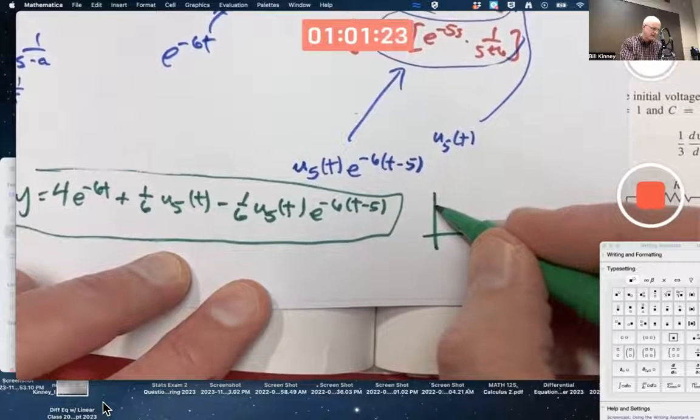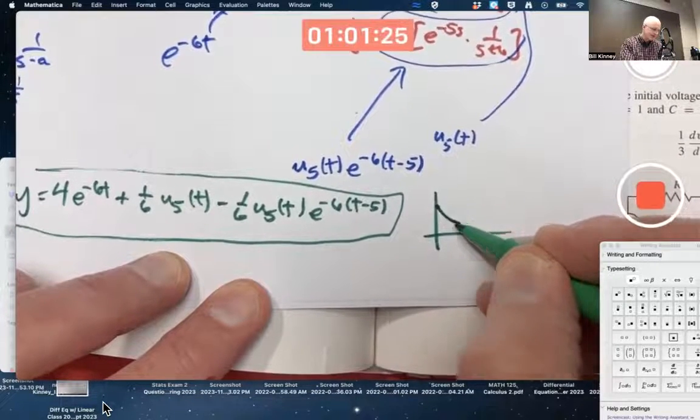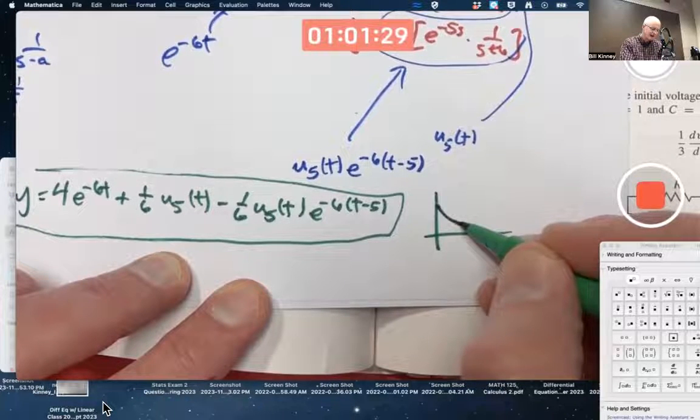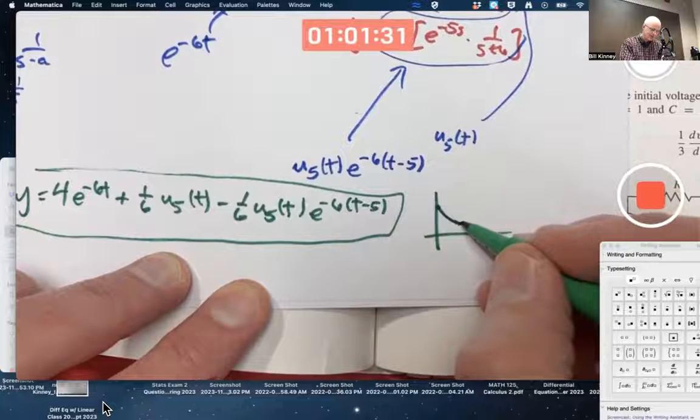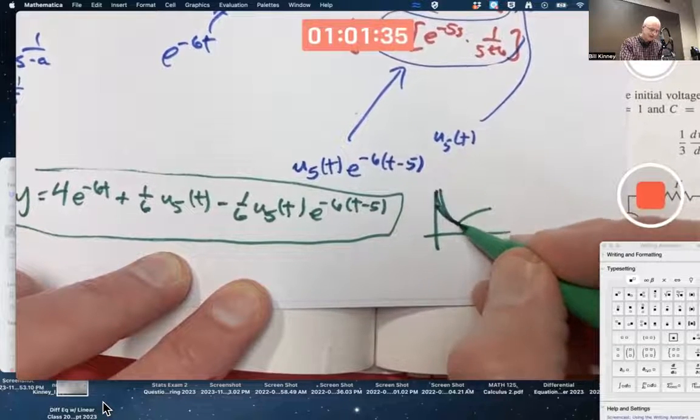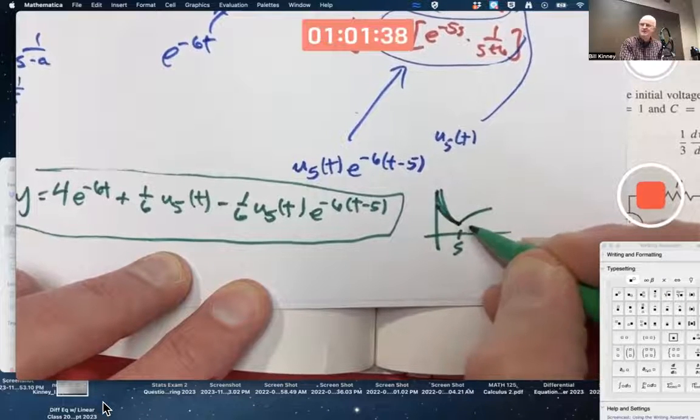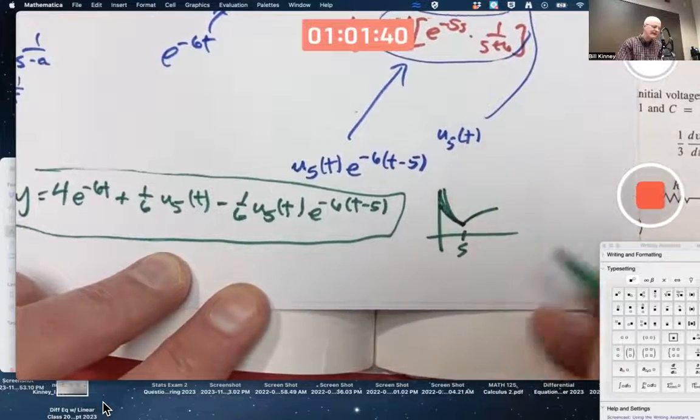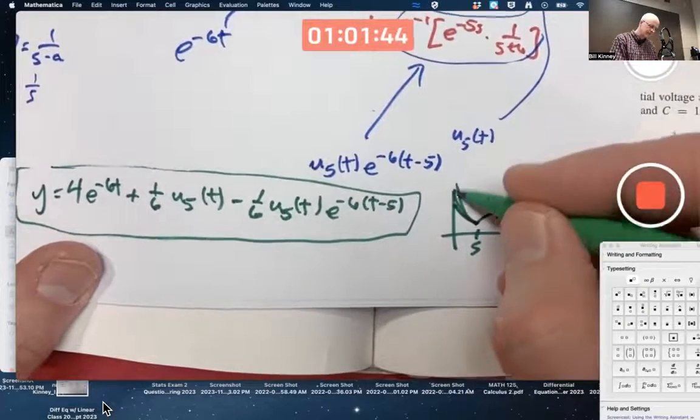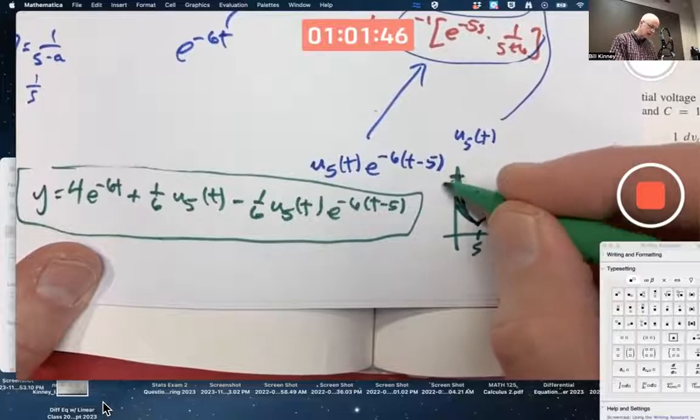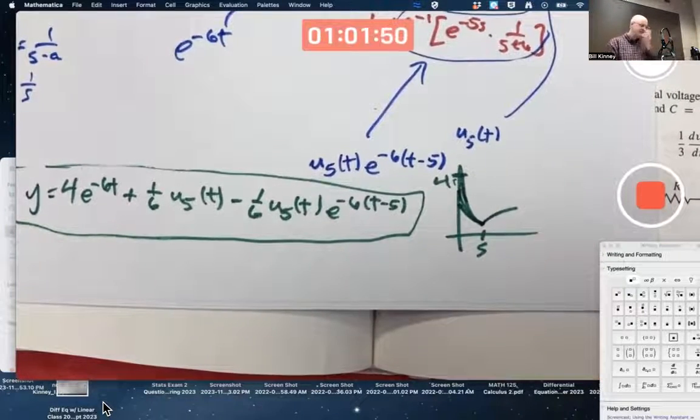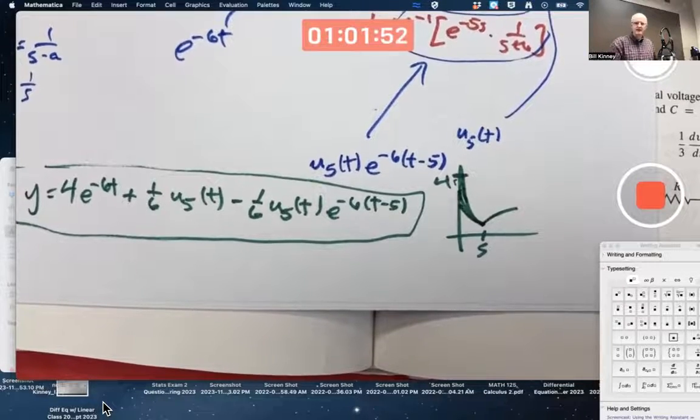I think the graph ends up probably looking something about like this. Let's see. I think it, I'm not sure. It might look something like that. There's like a discontinuity in its derivative at t equals 5. Something like that is my guess, but I'm not positive as far as what the graph looks like. It does go up to 4 here. This graph is not to scale. Okay. That's, it's probably its general shape.